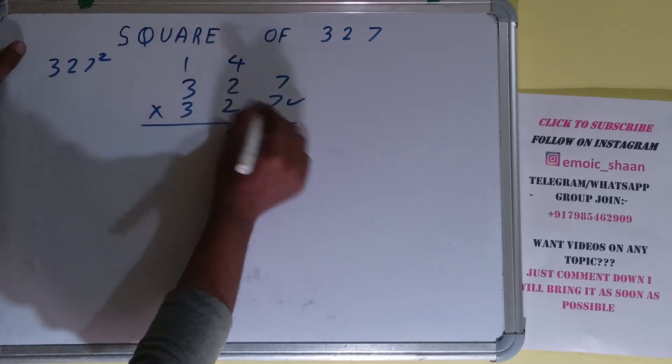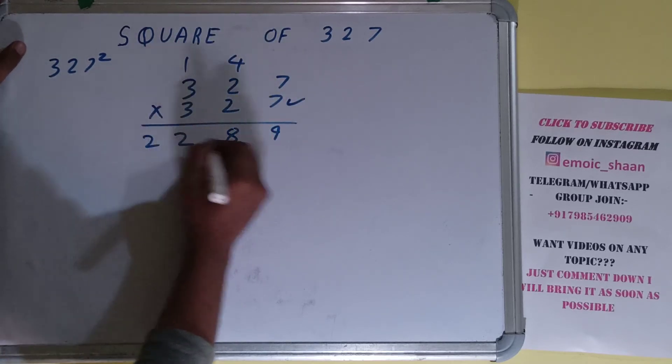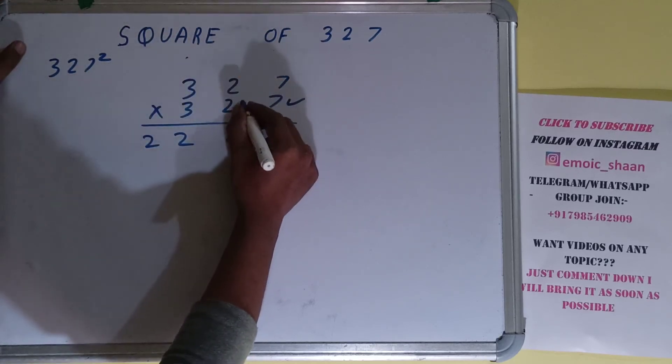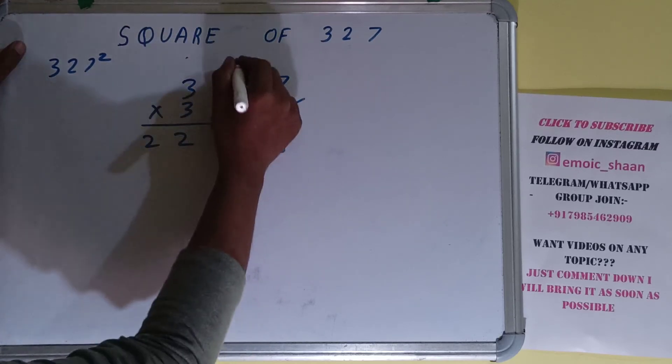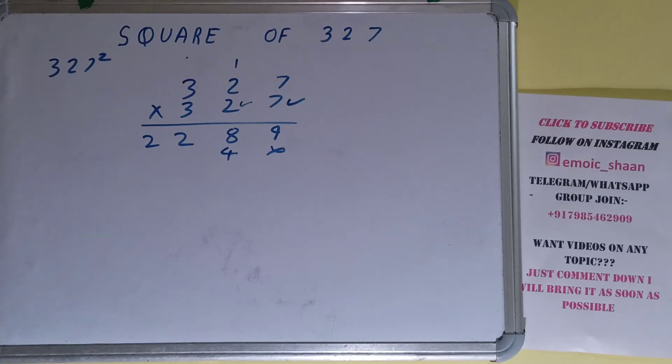7 times 3 is 21 plus 1 is 22. Then with this 2, now this 2 times 7 is 14. 1 carry. 2 times 2 is 4 plus 1 is 5.